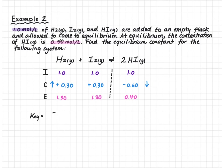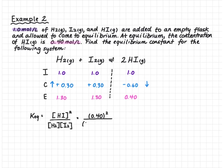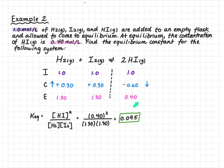We set up our Keq expression: products over reactants, so [HI]² divided by [H2][I2]. Plugging in our numbers: 0.40 squared over 1.30 times 1.30, and we get 0.095. This equilibrium constant is very small because this is a reactant-favored equilibrium — we can see this because we have a very large concentration of reactants at equilibrium and a relatively small concentration of products.